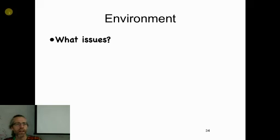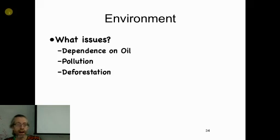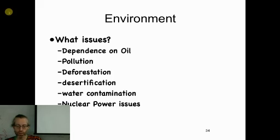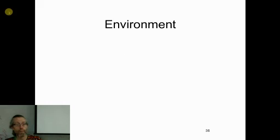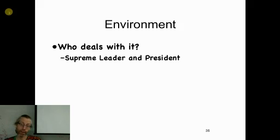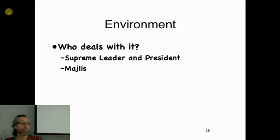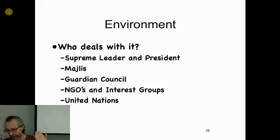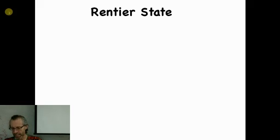On the environment: Iran's dependence on oil is a big issue, along with extreme pollution in Tehran, deforestation, desertification, water contamination, and the drying up of lakes, rivers, and water sources - and of course the nuclear power issues. The west opposes Iran's nuclear program because of fears they'll weaponize it. Who deals with environmental issues in Iran? The supreme leader and president are the most powerful - they can disagree but the supreme leader tends to win. The Majlis can pass environmental regulation laws. The Guardian Council could get involved, as can environmental NGOs, interest groups, and the United Nations.